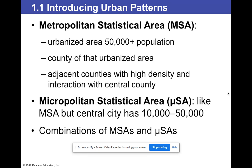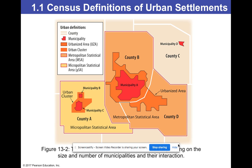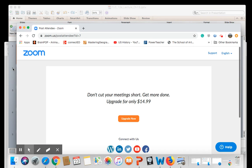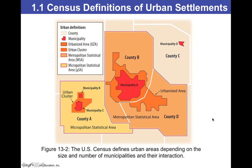A Micropolitan Statistical Area is like an MSA but the central city has 10,000 to 50,000 people. All over we have combinations of these, so everything is connected — micro and metropolitan all connected. The US Census defines urban areas depending on the size and number of municipalities: our municipality, our urbanized area, our urban cluster, and then our metropolitan and micropolitan.